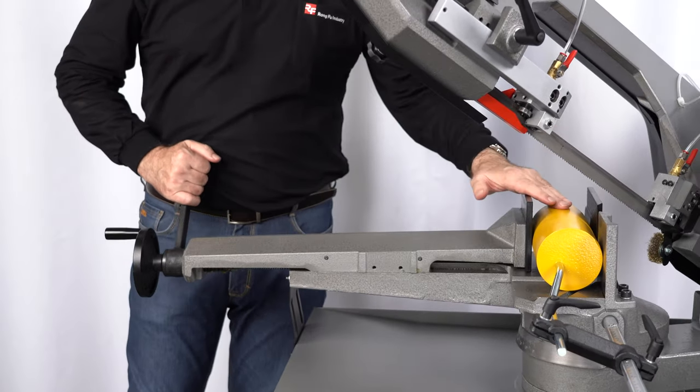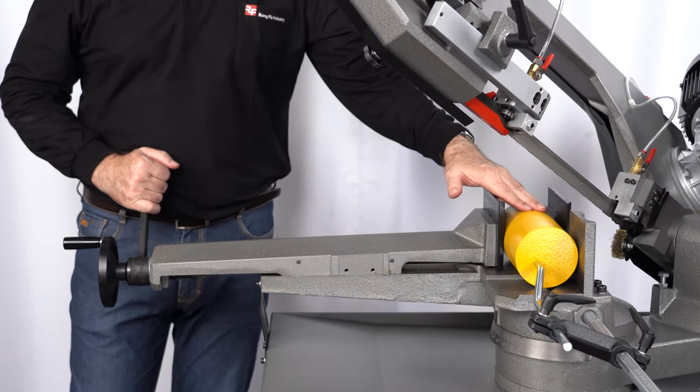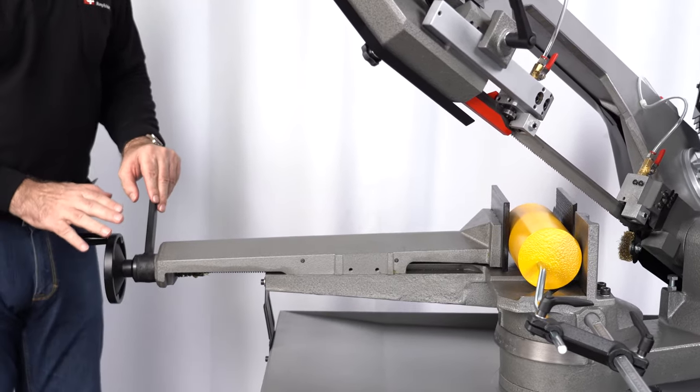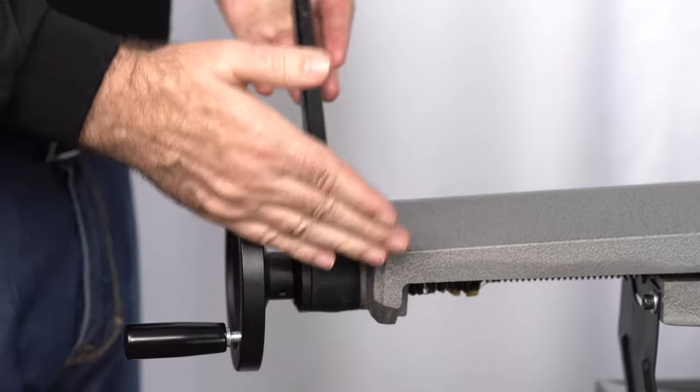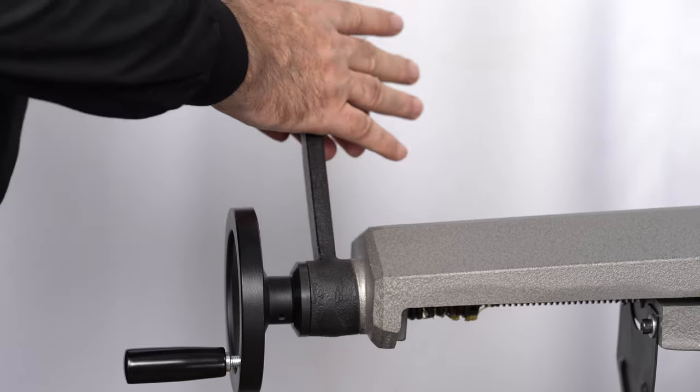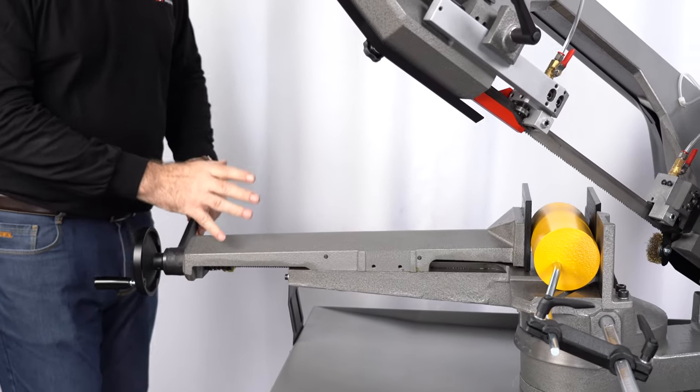Now the vice on the RF270 has an additional special feature. Once you've loaded the workpiece into the vice, we tighten it up in the normal way using the lever. But then we can use the additional clamping force lever to give it an extra squeeze and make sure that the workpiece is held really securely.